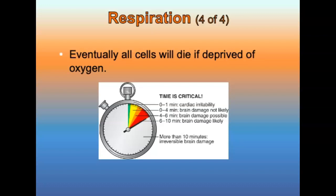When there is enough oxygen, cells convert glucose into energy through aerobic metabolism. Without adequate oxygen, anaerobic metabolism takes place, which cannot meet the metabolic demands of the cell. If this process is not corrected, the cells will eventually die.